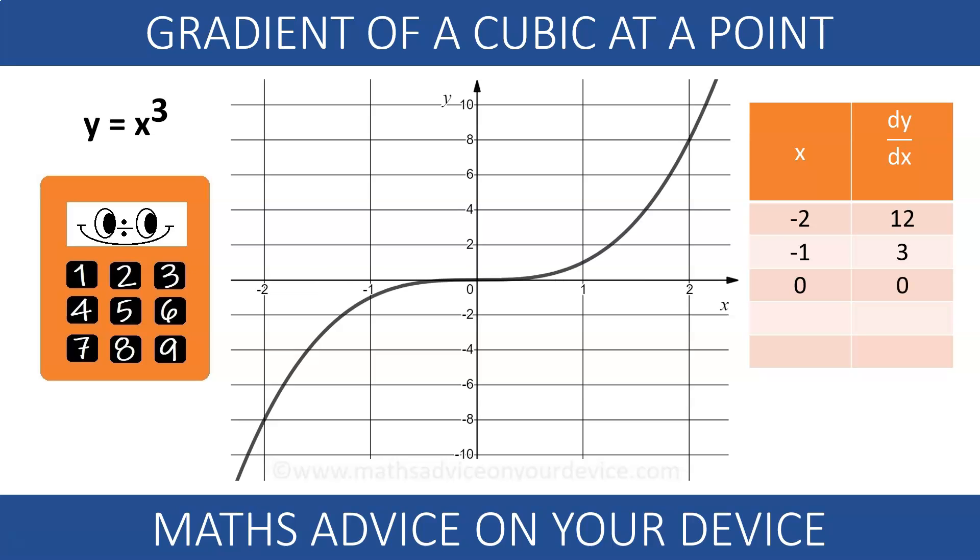Using the symmetry of this curve, it makes sense that the gradient for positive values of x is the same. At x equals 1 is 3. At x equals 2 is 12.